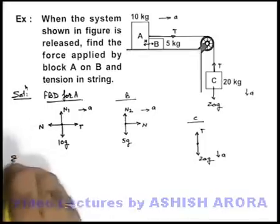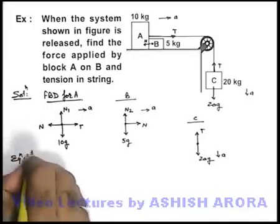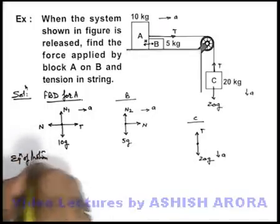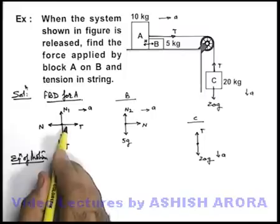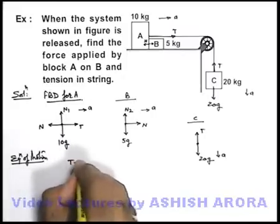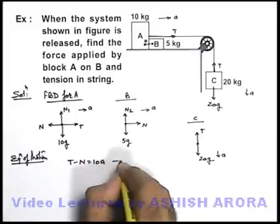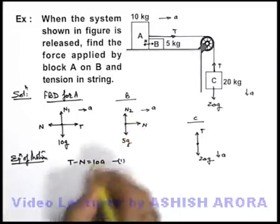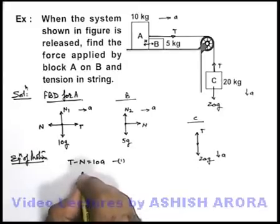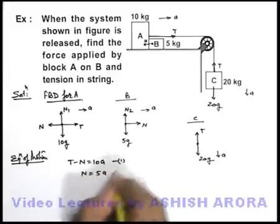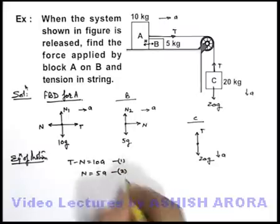Now we can write down the equation of motion for these blocks. So for block A we can write, it is T minus N is equal to 10A. This is equation 1. For block B we can write, N is equal to 5A. This is equation number 2.